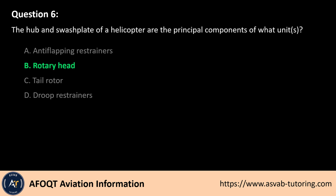The answer is B. The hub and swashplate are key components of the rotary head in a helicopter. The hub connects the rotor blades to the mast, while the swashplate enables pilot control by translating cyclic and collective inputs into blade movement. Together, they manage lift, thrust, and directional control, making them essential to the helicopter's rotor system.